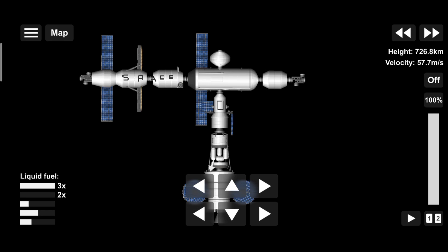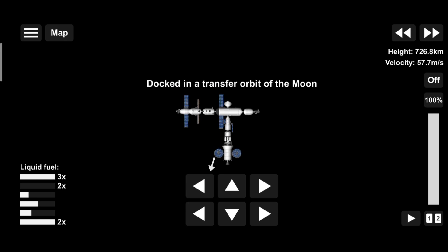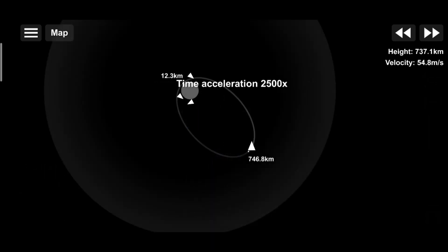The Gateway is also capable of adjusting its orbit to allow access to every part of the Moon, something the Apollo missions could not do.